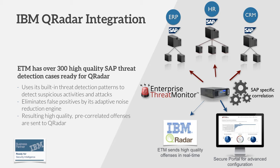So how does the IBM QRadar integration work? ETM already has over 300 high-quality threat detection cases for IBM QRadar. ETM runs on a Windows machine — it can be virtual or physical — and it connects to the SAP systems to get security-related info in real time. After Enterprise Threat Monitor analyzes this information, it processes it with the Adaptive Noise Reduction Engine. This engine uses machine learning and human training to eliminate false positives. Afterwards, it sends the pre-correlated information to IBM QRadar, which automatically shows high-quality offenses.